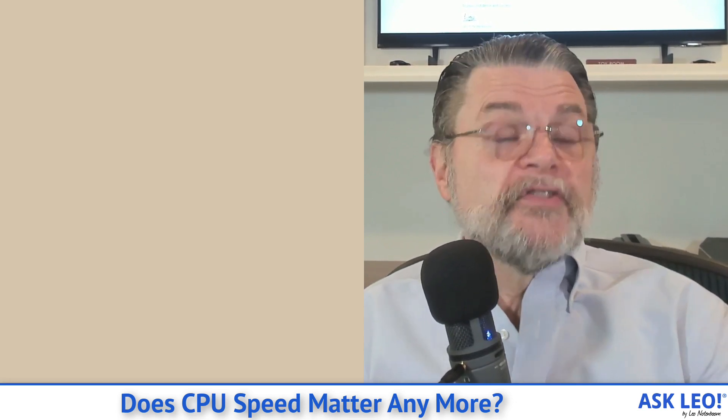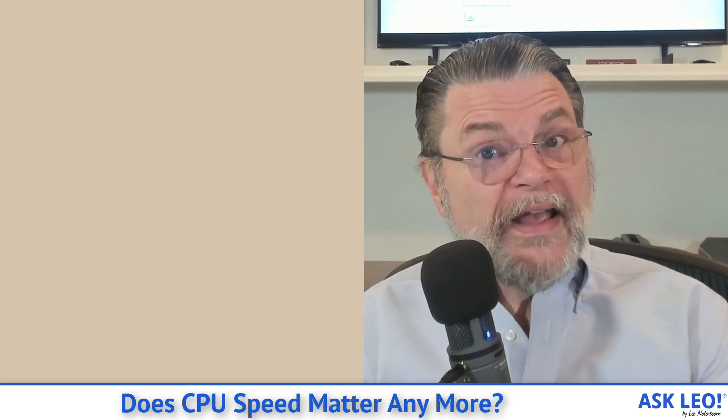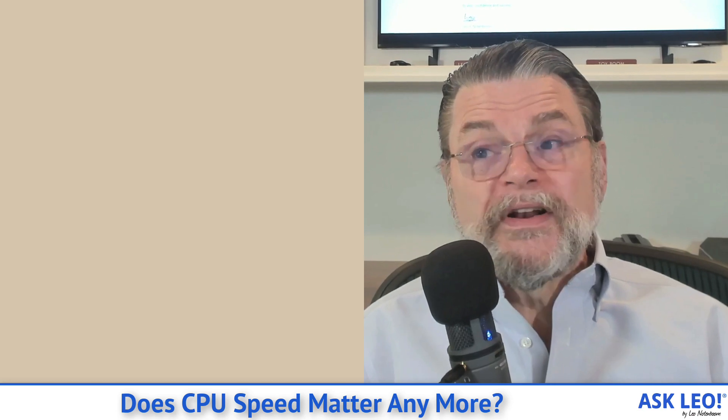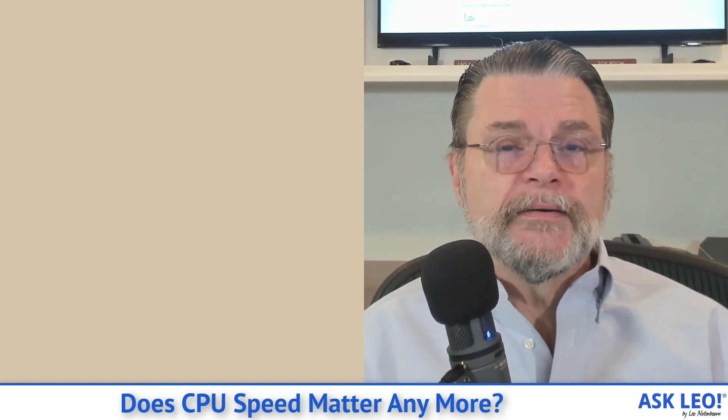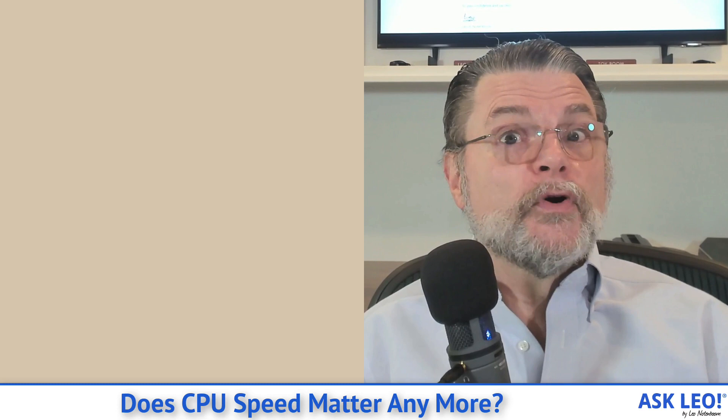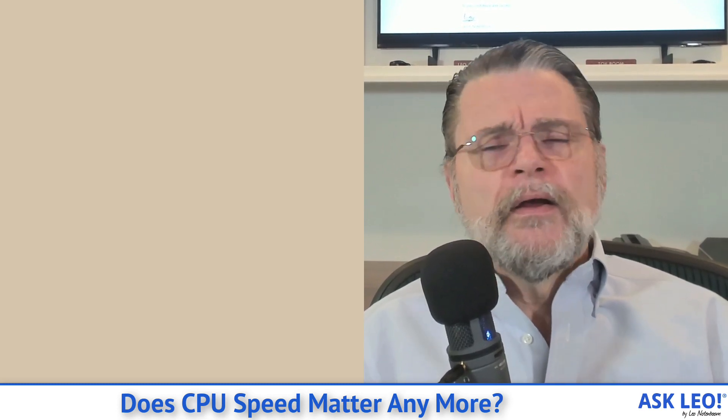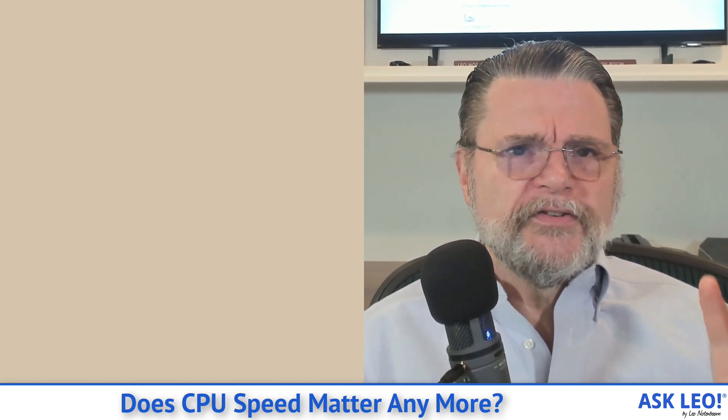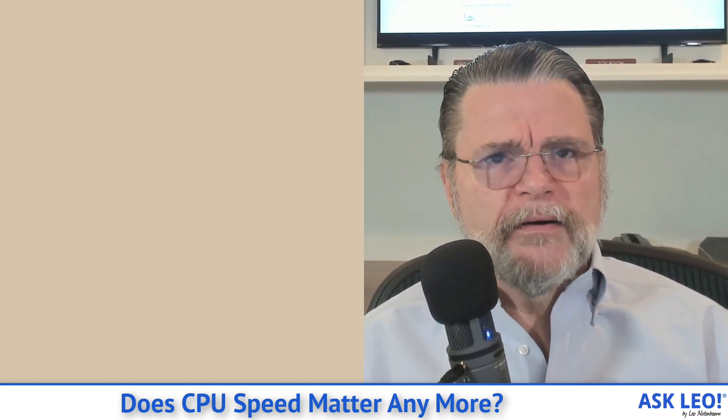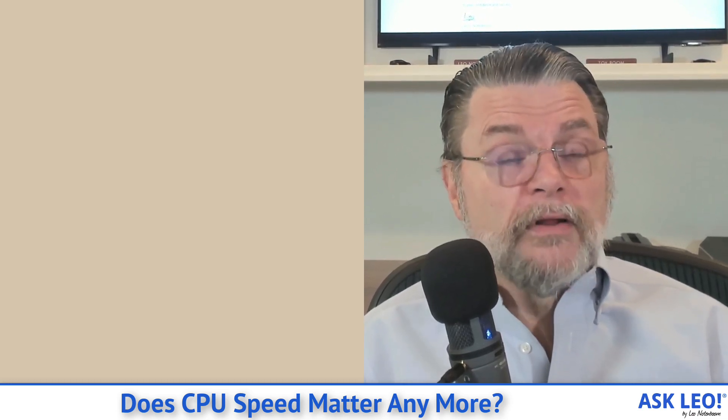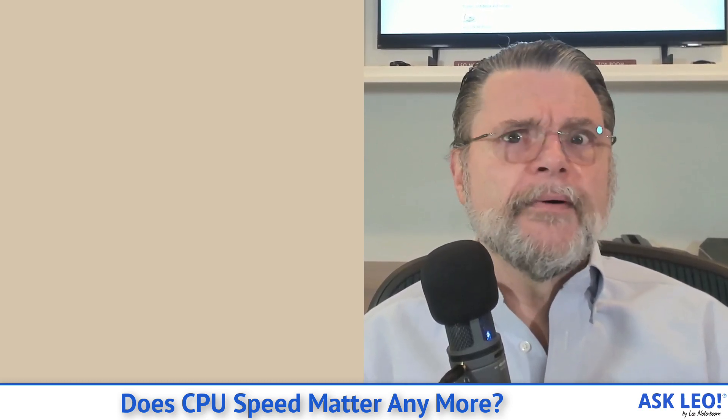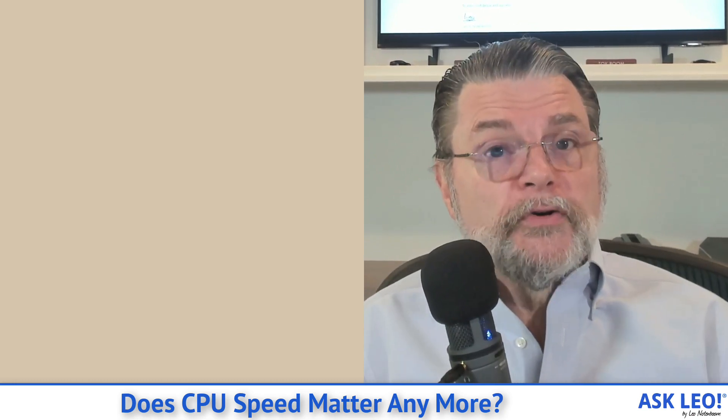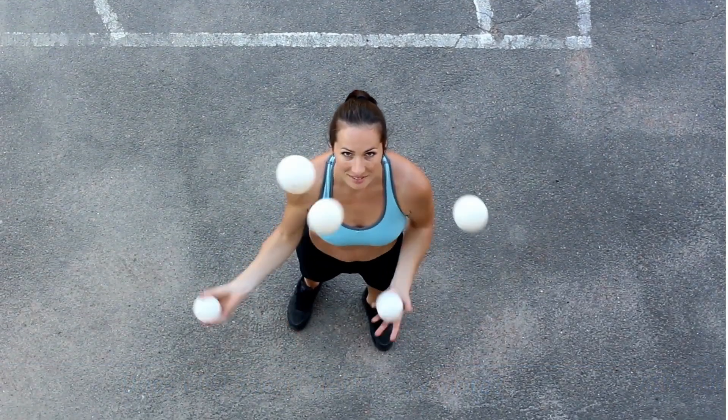So for example, there are two ways that multiple cores typically add a tremendous amount of value. One is it's rare that we're really only doing one thing at a time. While I'm sitting here recording this video, my machine is downloading email, it's updating web pages, it's doing all sorts of things in the background, in addition to getting all of this video and writing it to disk.